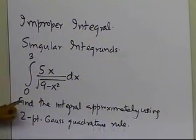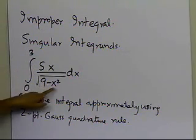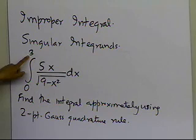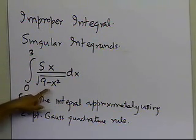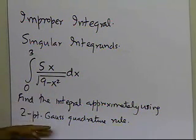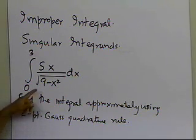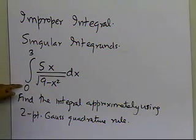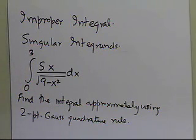One of the things you are seeing here is that this particular integrand, 5x divided by the square root of 9 minus x squared, is infinite at x equal to 3 — the upper limit of integration — because you get 9 minus 9, which is 0. The good thing about using the Gauss quadrature rule is that we never have to use the end points. The end points are never chosen as the quadrature points where the integrand values have to be calculated, so we don't have to worry about it becoming infinite at x equal to 3.